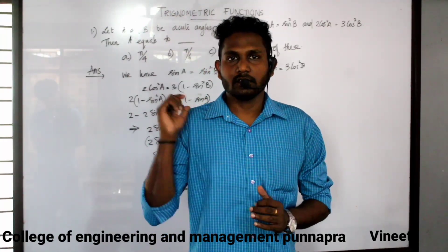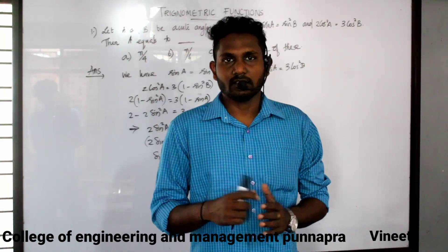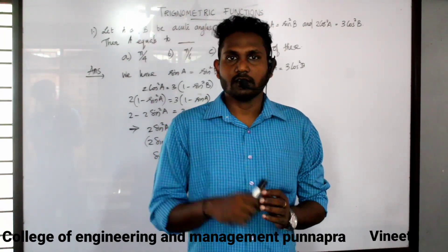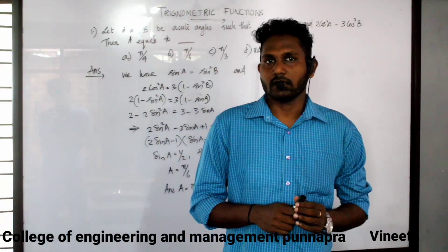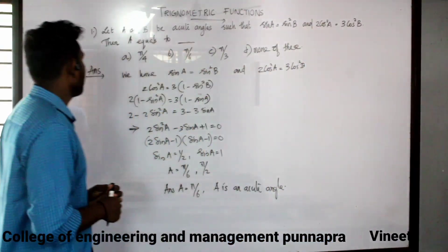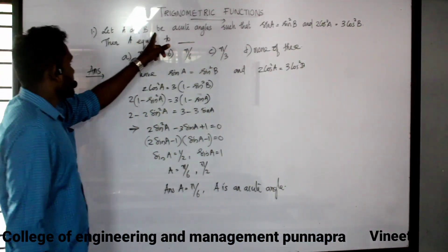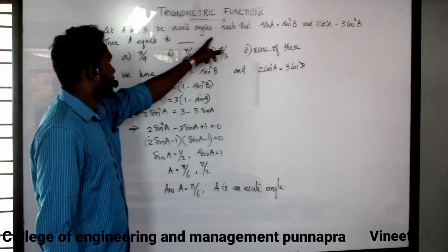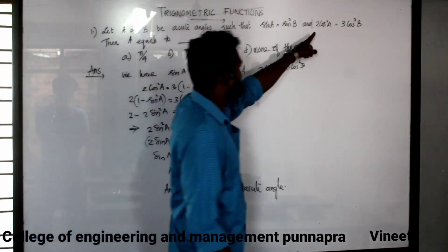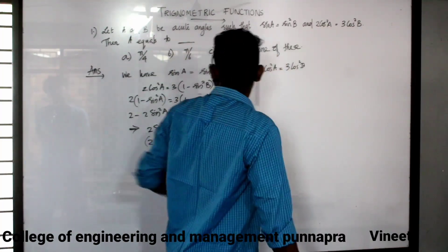The next chapter of trigonometry functions — given that sin a is equal to sin b and 2 cos square a is equal to 3 cos square b.